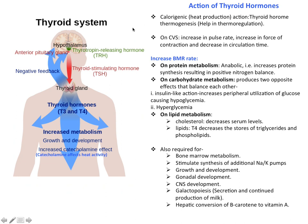Now the action of thyroid hormones. Our hypothalamus secretes thyrotropin-releasing hormone, which goes to the anterior lobe of the pituitary gland and stimulates the release of TSH — thyroid stimulating hormone. TSH goes to the thyroid gland and stimulates the secretion of T3 and T4 hormones. These T3 and T4 hormones go to their target cells, where they execute various functions like growth, development, and increased catecholamine activity.